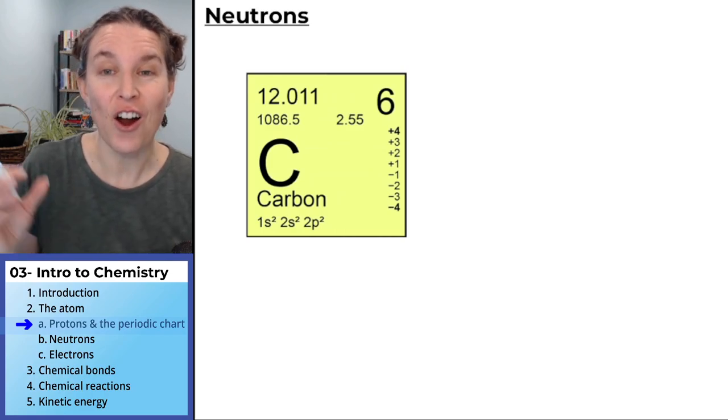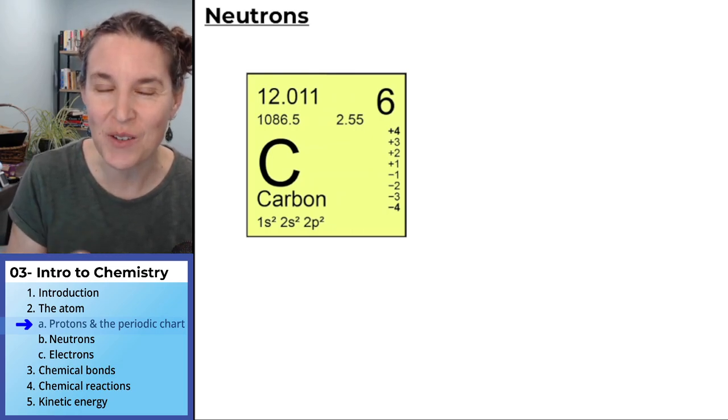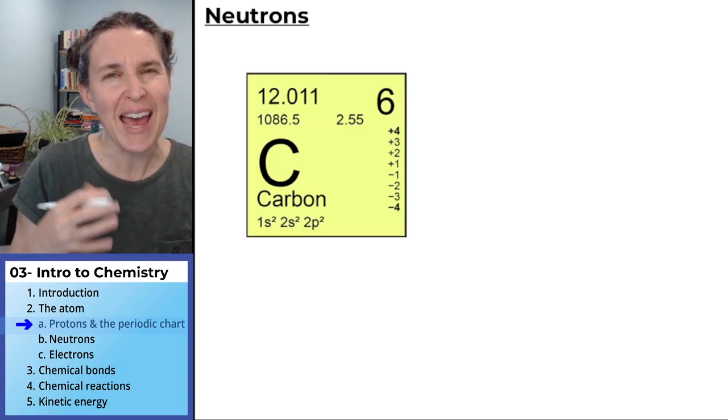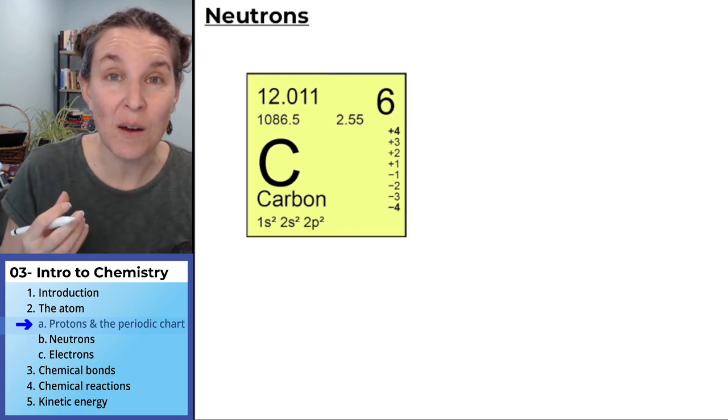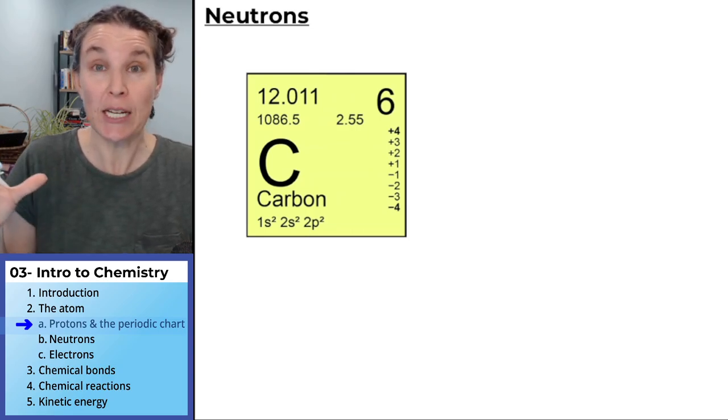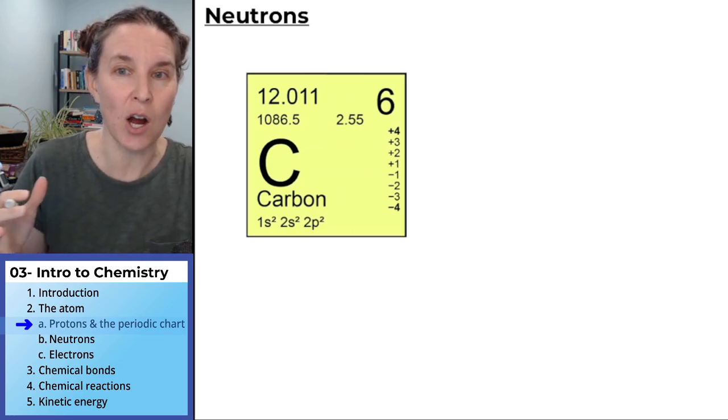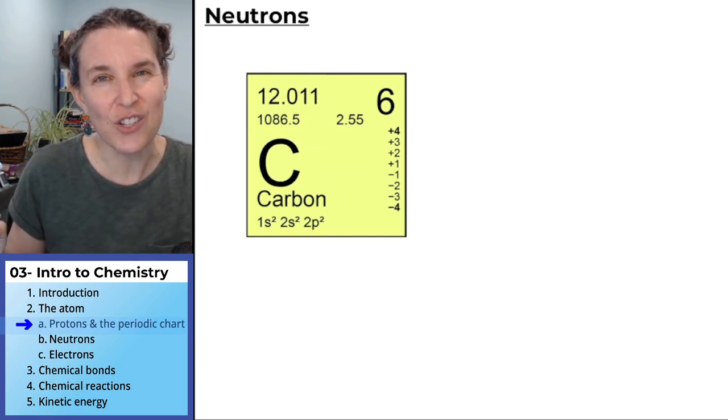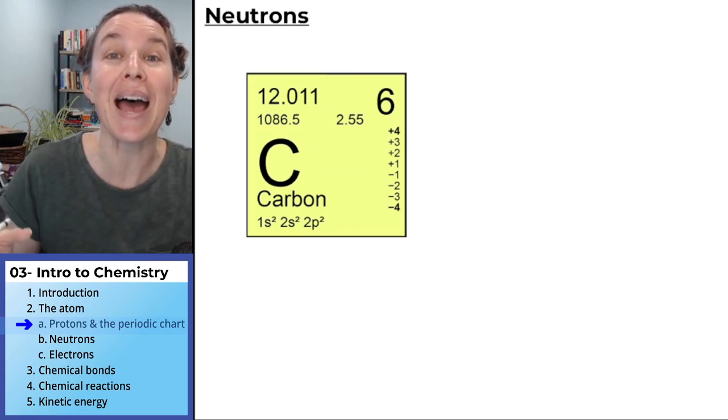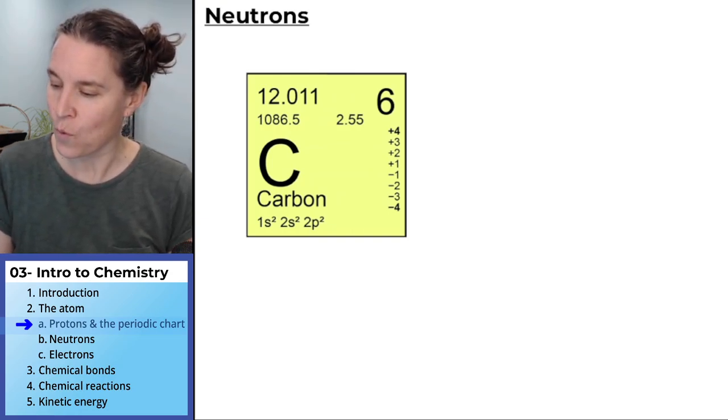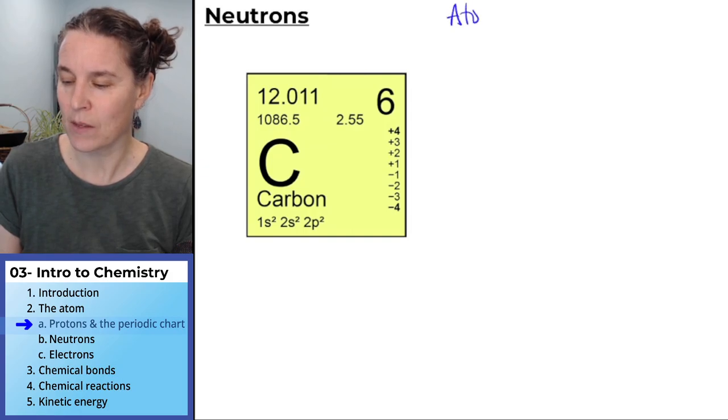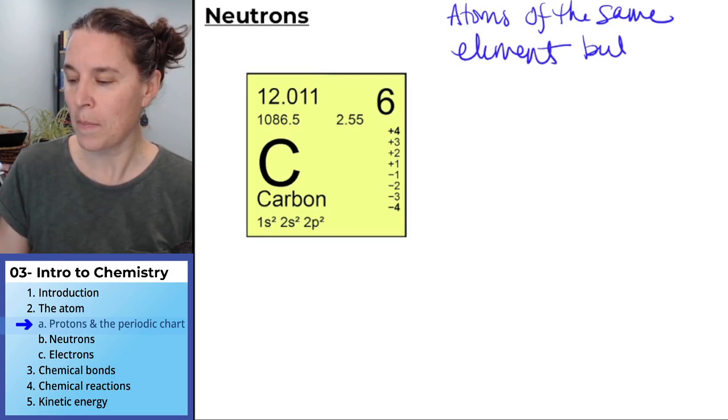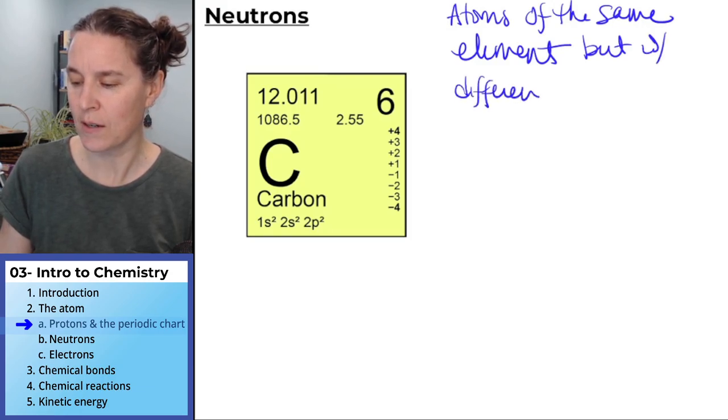Now, remember, neutrons are particles, subatomic particles, also found in the nucleus. So the nucleus contains the protons, which the number of those tells you what element you have. And then it contains neutrons. The number of neutrons in an element doesn't change it. So you can have different forms of, say, carbon that have different numbers of neutrons. If you change the protons, you don't have carbon anymore. But if you change the neutrons, you do. You just are changing the mass of the atom.